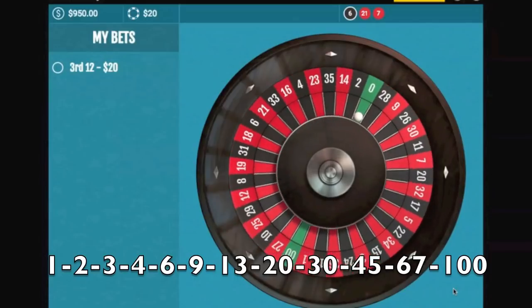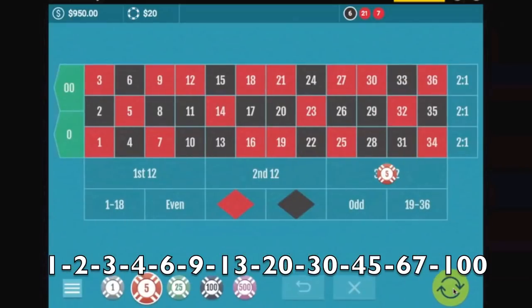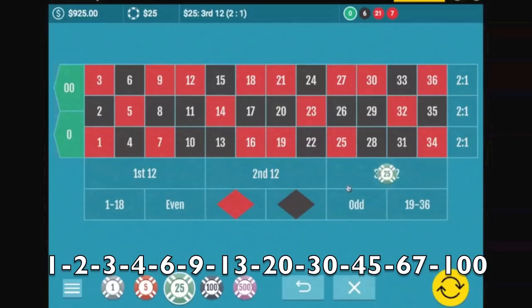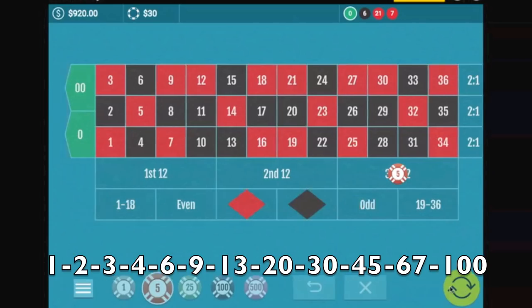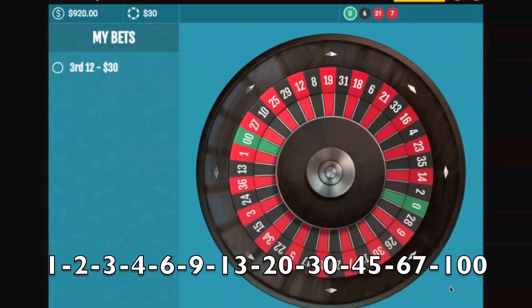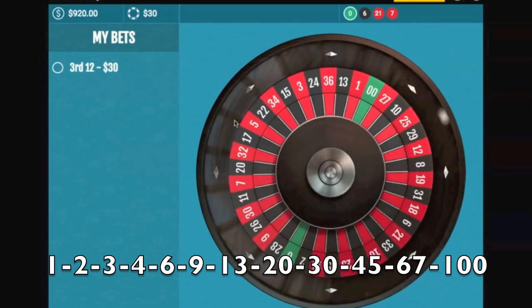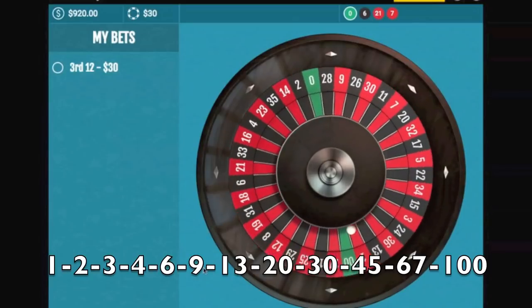Dreaded zero. No problem. Next number six, it's going to be a thirty dollar bet.